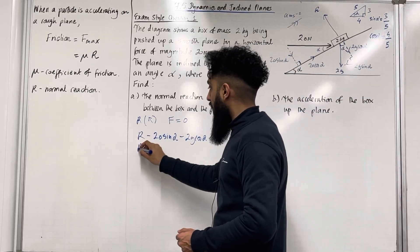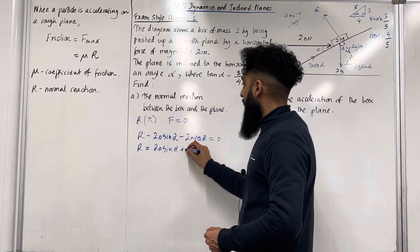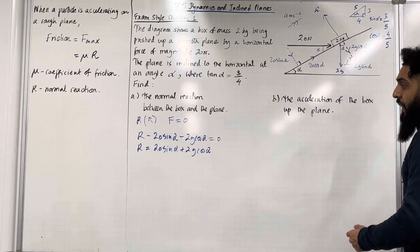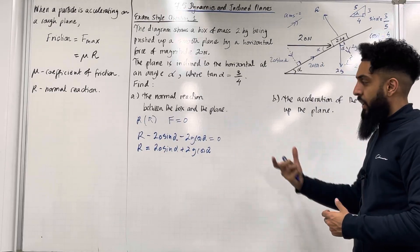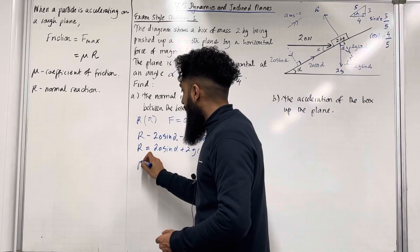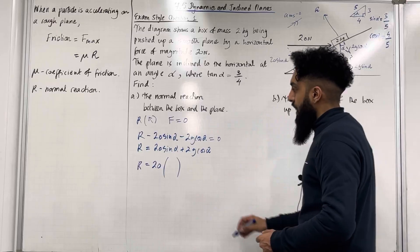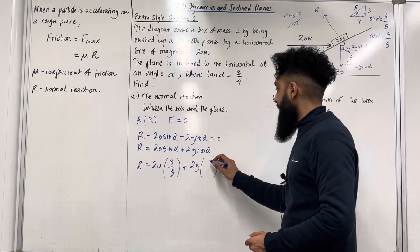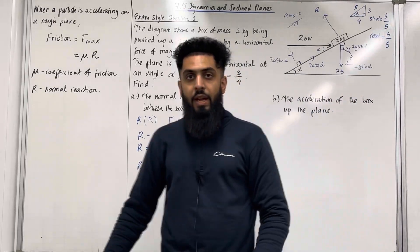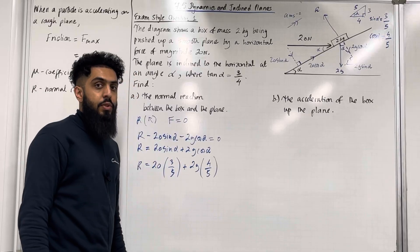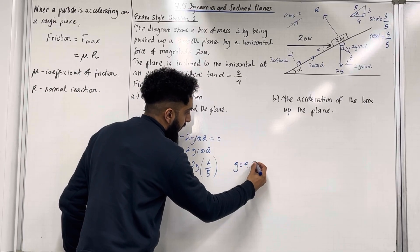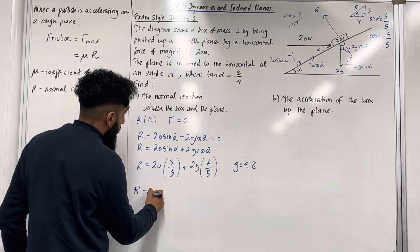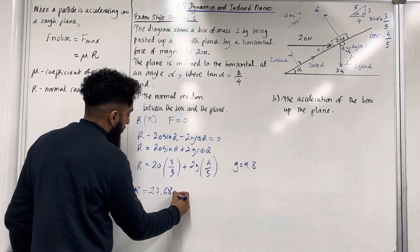Making R the subject: R equals 20 sin alpha plus 2g cos alpha. Sin alpha is 3 over 5 and cos alpha is 4 over 5, so R equals 20 multiplied by 3 over 5 plus 2g multiplied by 4 over 5. Using g equal to 9.8, if I put this into my calculator I get the normal reaction R is equal to 27.68 newtons to 4 significant figures.